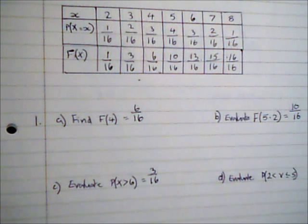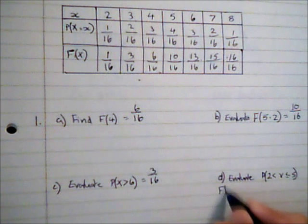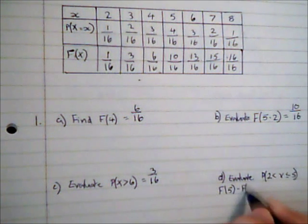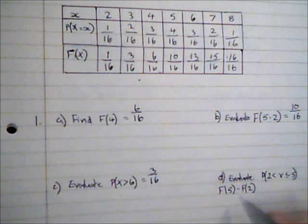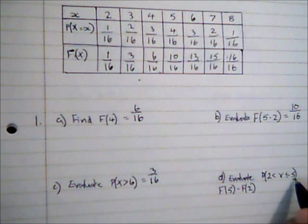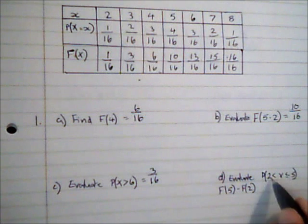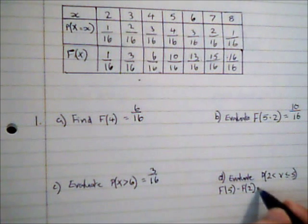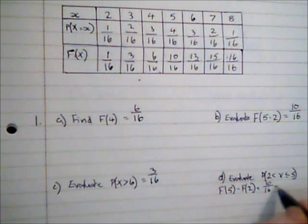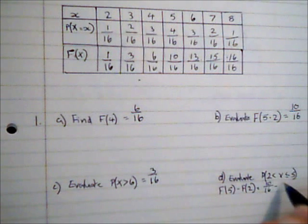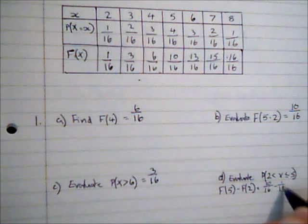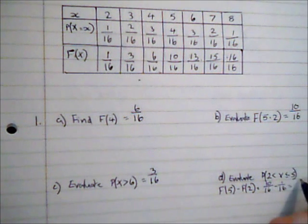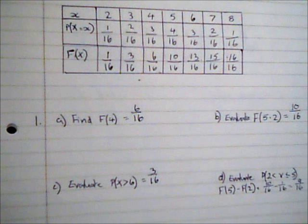I can think of it as well F(5) subtract F(2), which is everything up to and including 5 subtract everything up to and including 2, which just leaves me the values of 3, 4 and 5. So if I was to do that I would then have 10/16ths subtract 1/16 and that would give me an answer of 9/16ths which is fine.